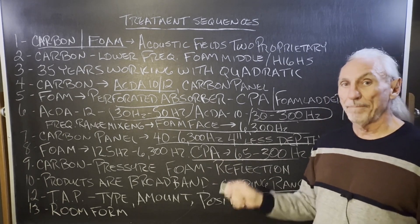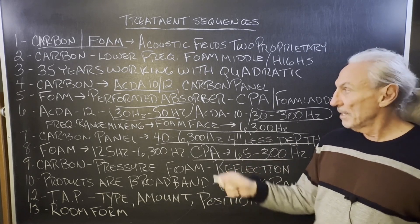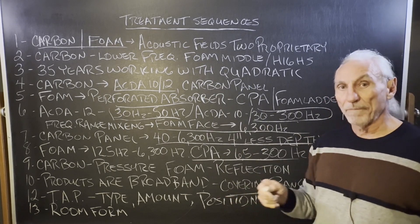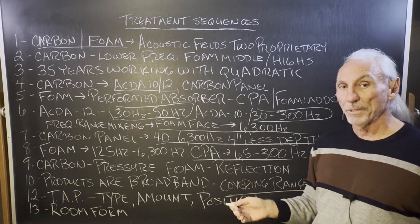Got to follow the acronym TAP. Type, amount, and position. You got to choose the type of all of these. You got to figure out the amount. We help you with that. And then where to place it. We help you with that.